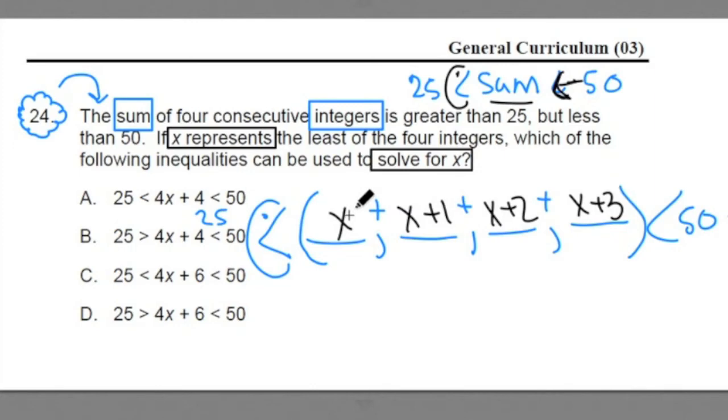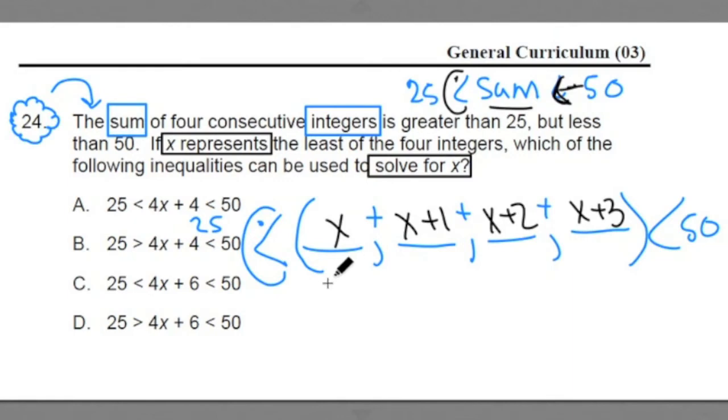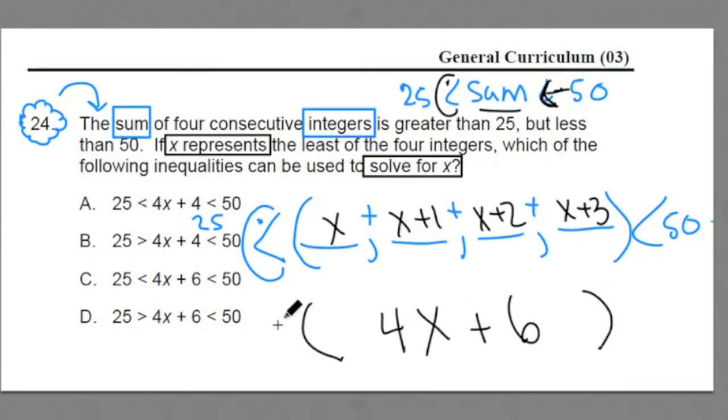When we add up these four terms, we have four x's. We always add the variables and constants separately. The four x's get you 4x. The 1, 2, and 3 add up to 6. Now we have an algebraic expression 4x plus 6 that represents the sum of four consecutive integers. When we add back in our inequalities, 25 is less than 4x plus 6, which is less than 50. That should match us up with c. C is the answer.